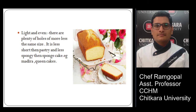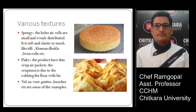Light and even: there are plenty of holes of more or less small sizes. It is less short than pastry and less spongy than sponge cake, like Madeira or queen cakes. Spongy: the air cells are small and evenly distributed; it is soft and elastic to touch, like idli, khaman dhokla, Swiss roll, and sponge cake.